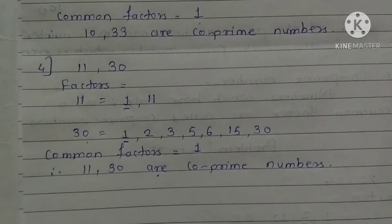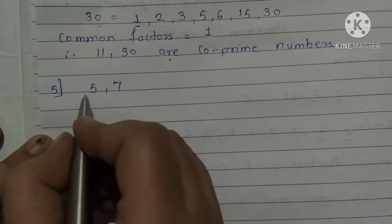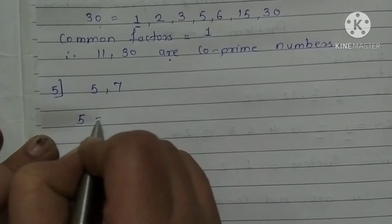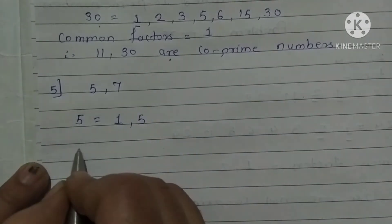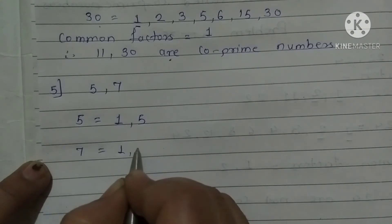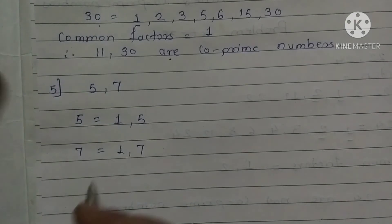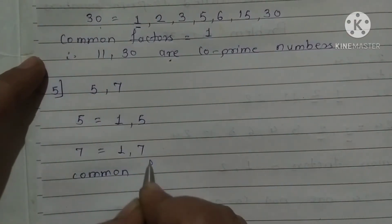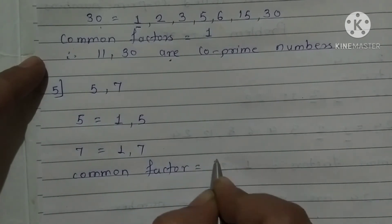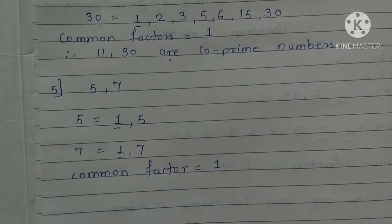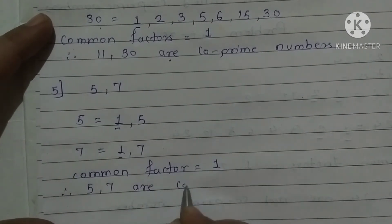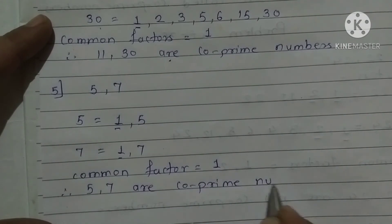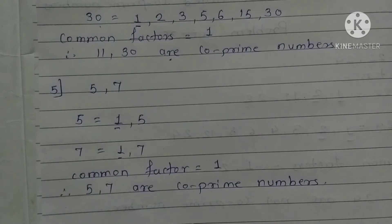Now let's see the fifth example. The fifth example is 5 and 7. Factors we have to write. First, the factors of 5 — is 5 in any other table? No. So the factors of 5 are 1 and 5. Then 7 — it is also a prime number. So the factors are 1 and 7. The common factor is only 1. Therefore, 5 and 7 are co-prime numbers. As we know how to write the factors and find the common, it is very easy.